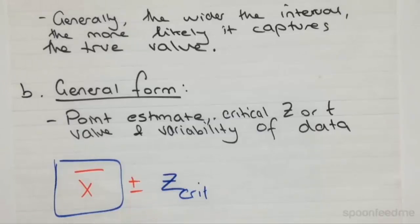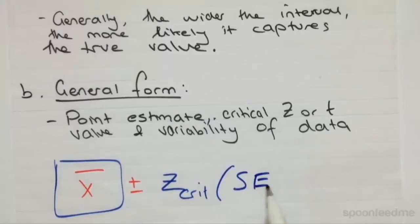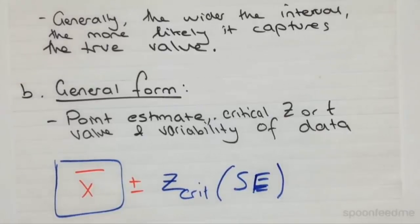And we'll come back to that in just a moment. Then we're going to be multiplying this by the standard error or the sampling error. And that's usually the standard deviation of the population divided by the square root of the number of data points in the sample.